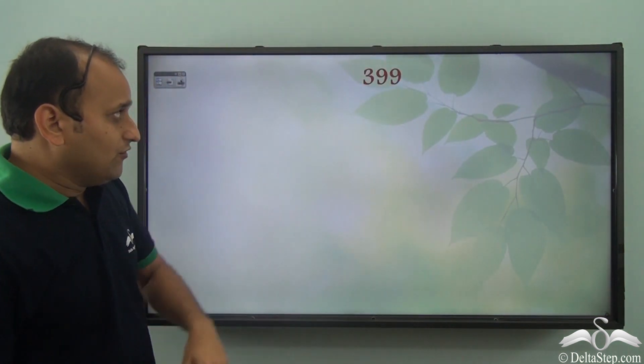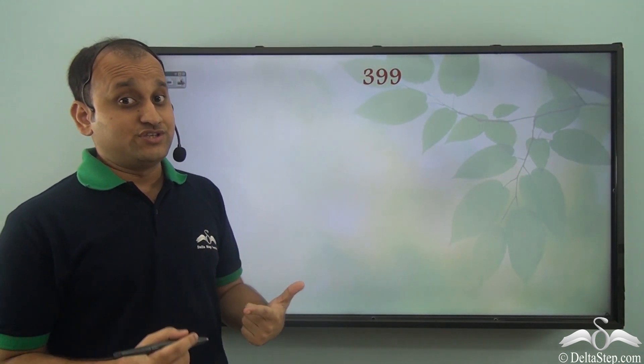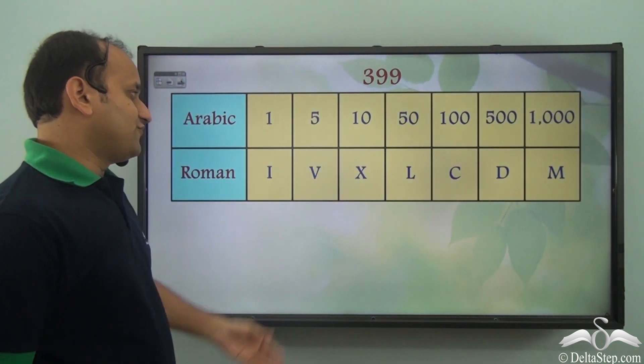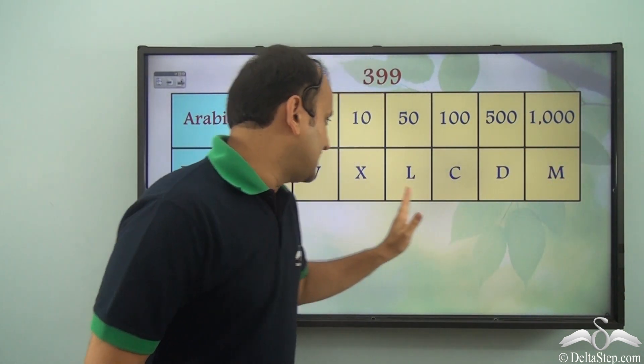So now we have 399. Can you write this using Roman numerals? Well, let's try. First of all, let's have this table here.